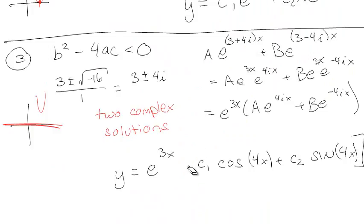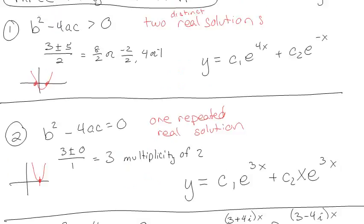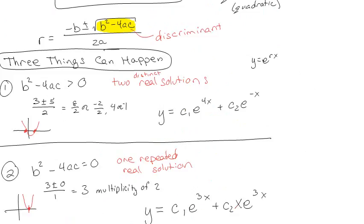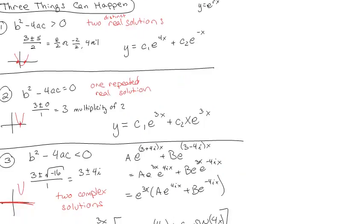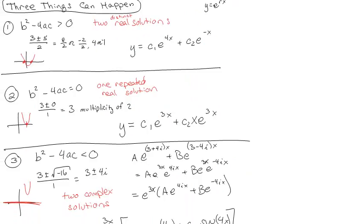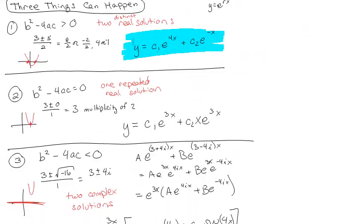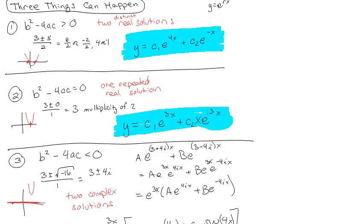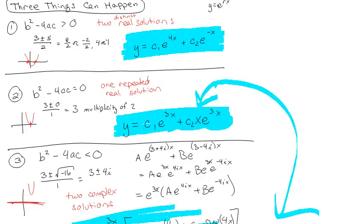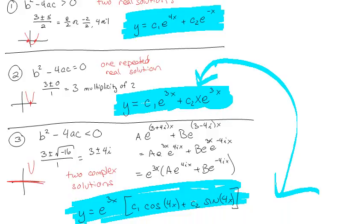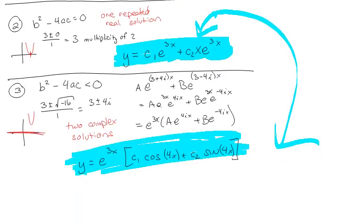So basically there are three possible outcomes from the quadratic characteristic equation, giving three types of solution formats. If we have two real solutions, we get two exponential terms. If we have one repeated solution, we get the e term plus an extra x multiplied in on the second term. And if we have complex solutions, we get e to the real part times a linear combination of sines and cosines of the imaginary part. Now let me show you where that extra x comes from.